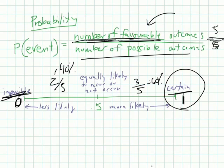So again, probability is the number that you're looking for, favorable outcomes, over the number of possible outcomes. Let's continue.